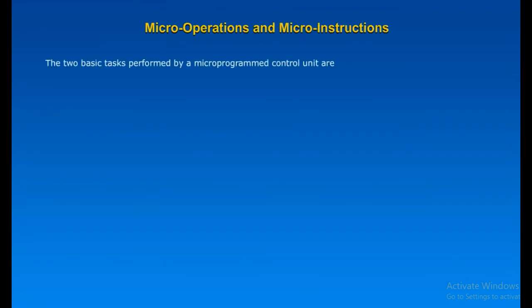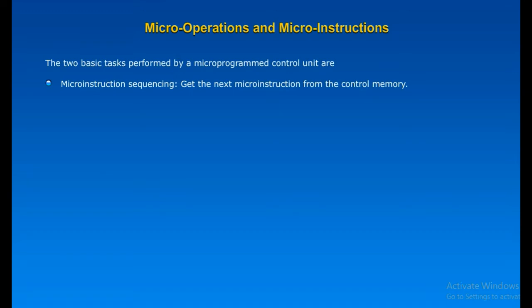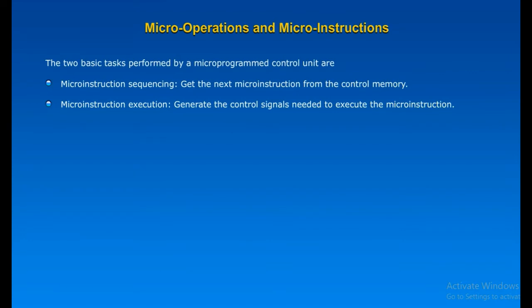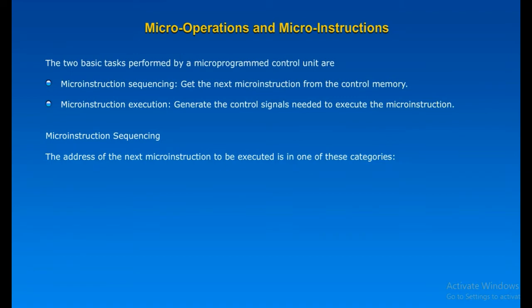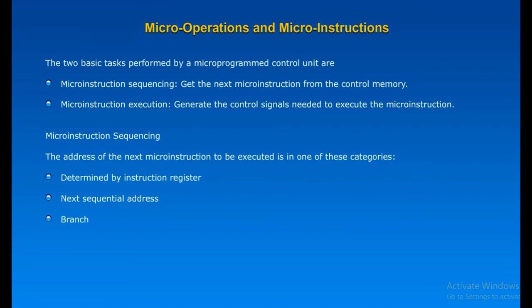The two basic tasks performed by a microprogrammed control unit are: Microinstruction sequencing — get the next microinstruction from the control memory; and Microinstruction execution — generate the control signals needed to execute the microinstruction. In executing a microprogram, the address of the next microinstruction to be executed falls into one of three categories: determined by the instruction register, next sequential address, or branched. The first category occurs only once per instruction cycle, just after an instruction is fetched. The second category is the most common in most designs.